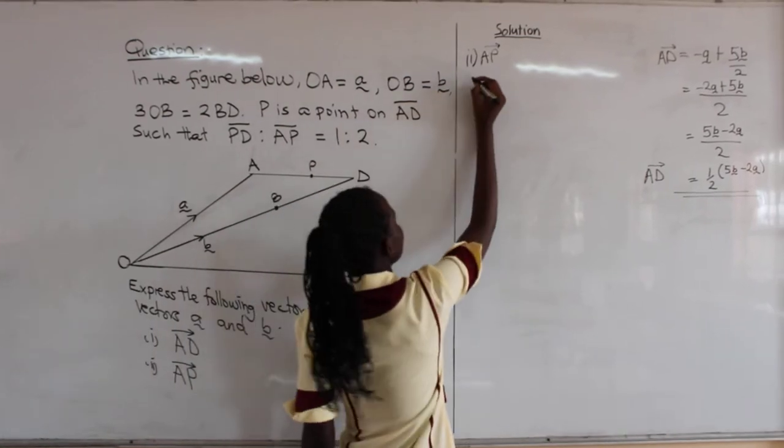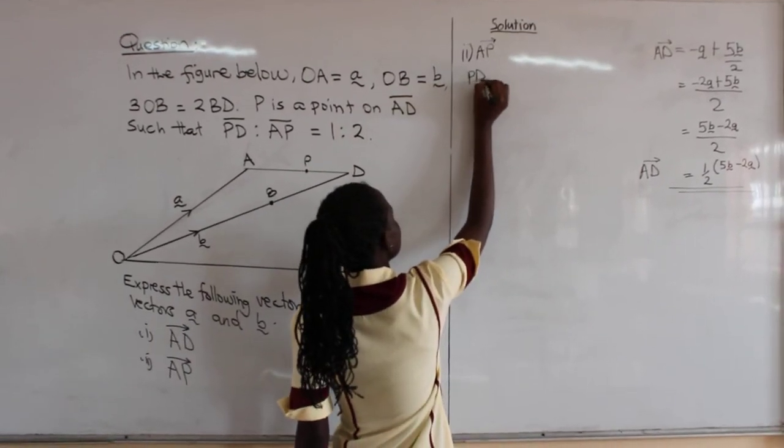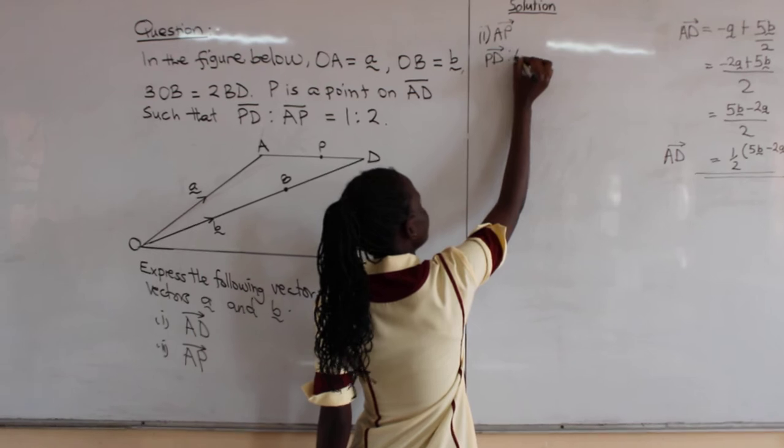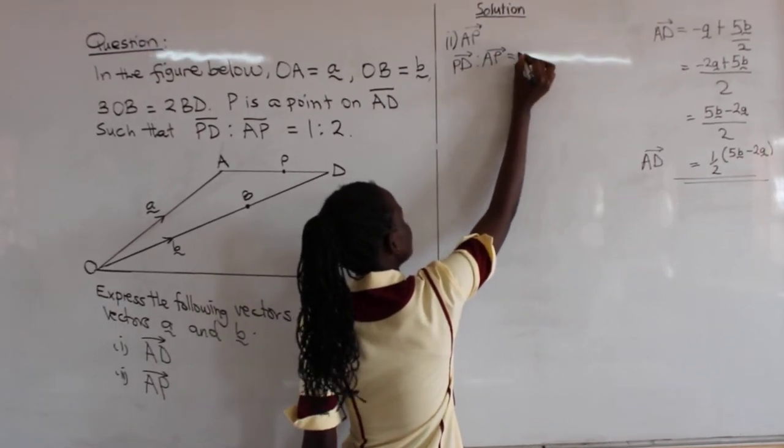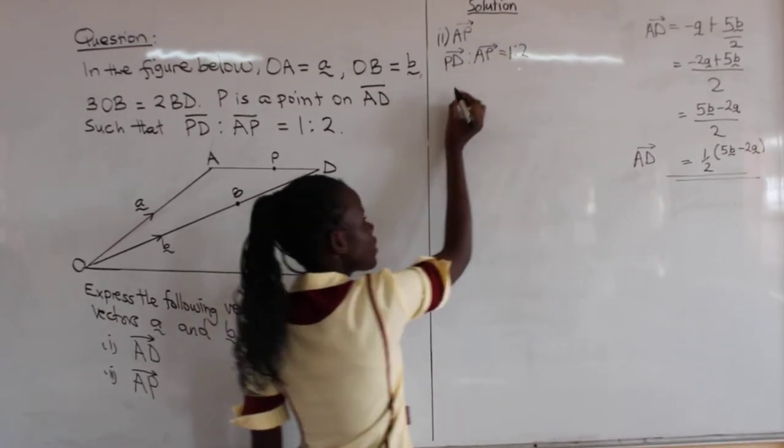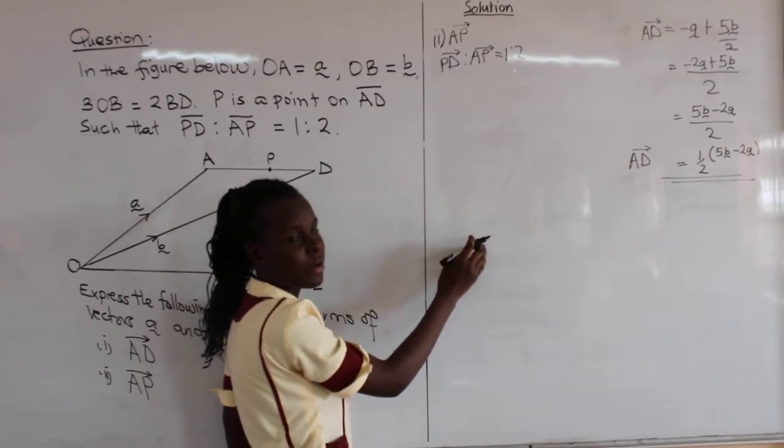So we shall compare it. PD to AP is equal to 1 to 2. So we shall get our total ratio.